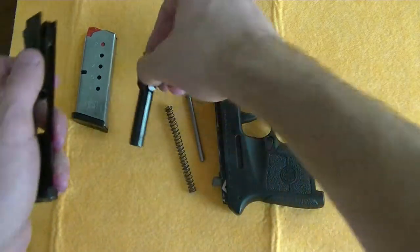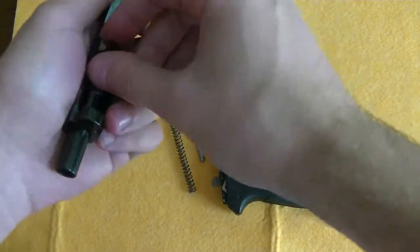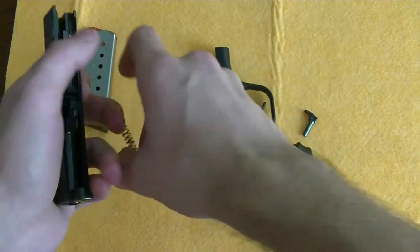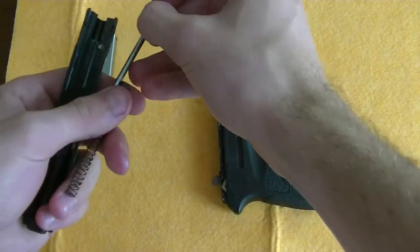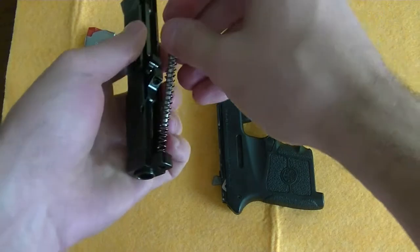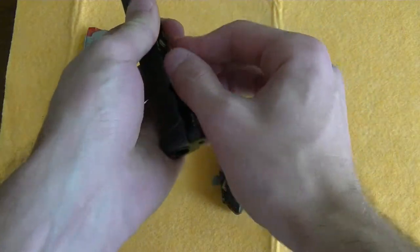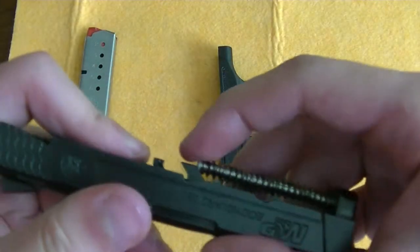To assemble, put the barrel back in place. Assemble the recoil spring and recoil spring guide rod. Put them back into the slide, like so.